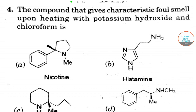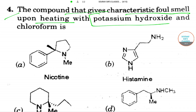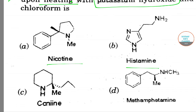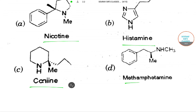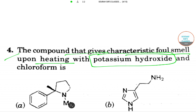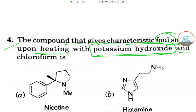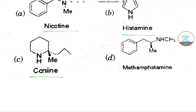The next question is about the compound that gives a foul smell upon heating with potassium hydroxide and chloroform. The options include nicotine, histamine, and others. We need to find which compound upon reaction with KOH and chloroform will smell foul.